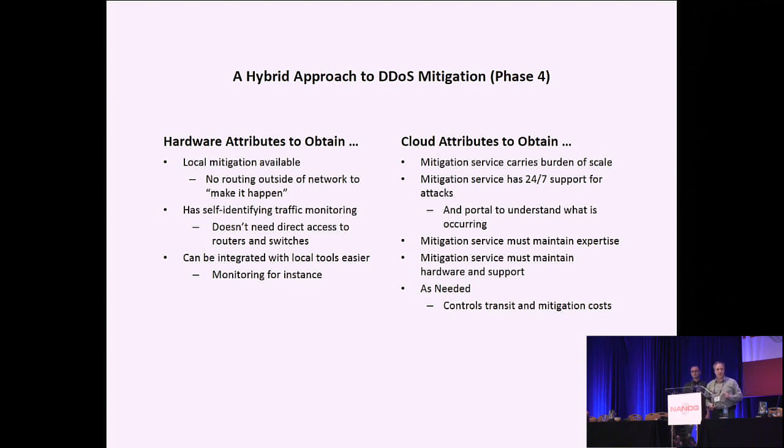So one of the hardware attributes that we liked is you had control. It was local. The mitigation didn't have to necessarily go somewhere. I kind of like that. If it's not big, why send it up? Why go run to somebody else to make it happen? The other is it had the self-identifying traffic monitoring. They didn't need access to my routers. They kind of were stand-alone. I liked that. And that they could be integrated with my local tools because I knew what was going on.